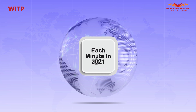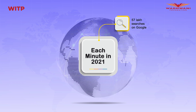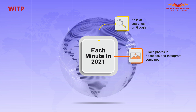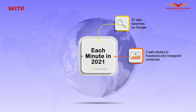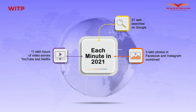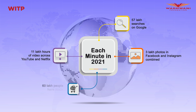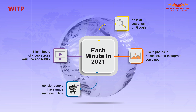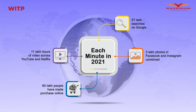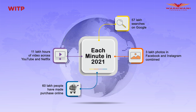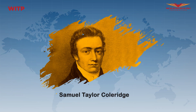In each minute in 2021, we conducted 57 lakh searches on Google. Users shared over 3 lakh photos on Facebook and Instagram combined. Users streamed over 11 lakh hours of video across YouTube and Netflix, and over 60 lakh people made purchases online. Yes, all this in a short one minute — every minute in 2021.